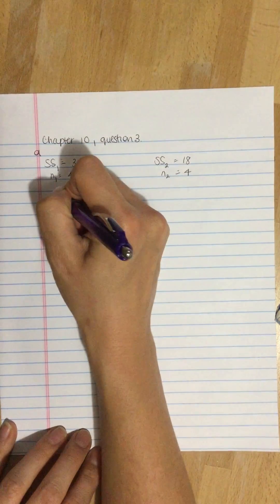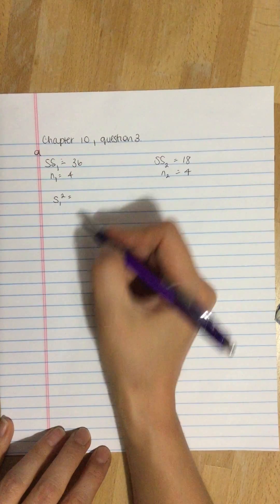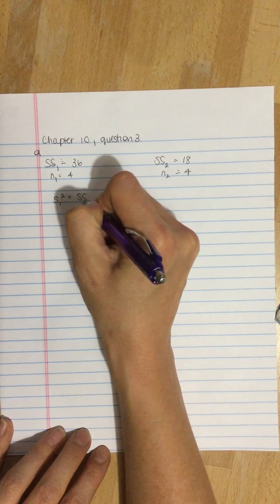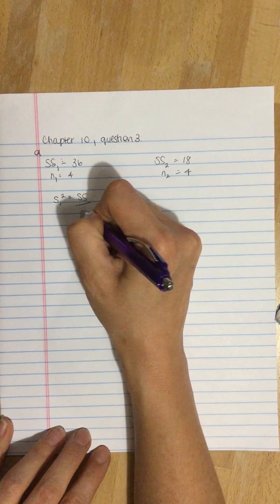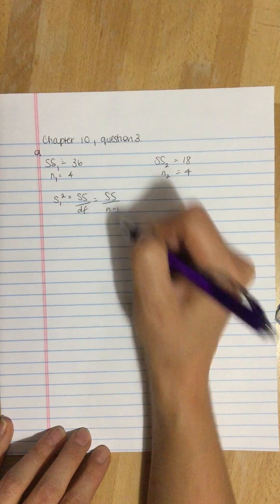We need to find the sample variance for the first one, which is the sum of squares divided by the degrees of freedom, which is sum of squares divided by n minus 1.